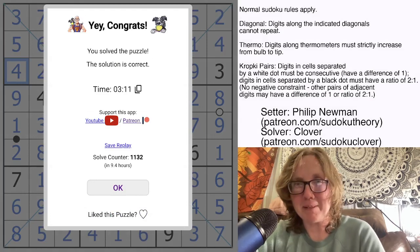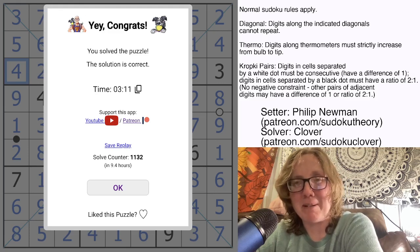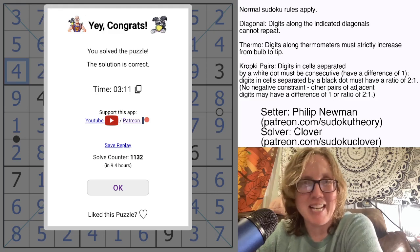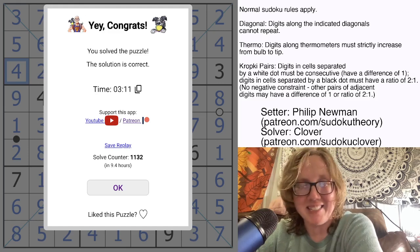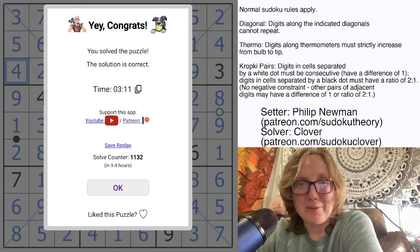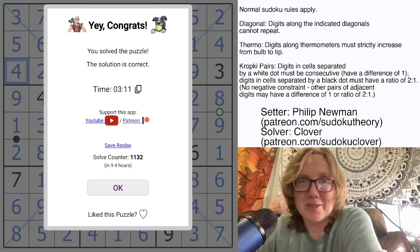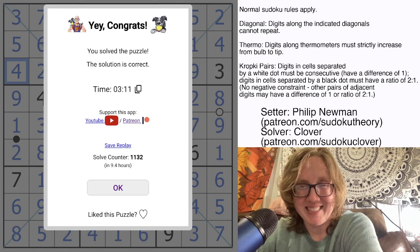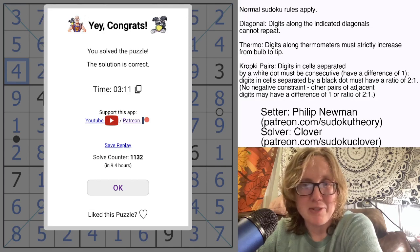By the way, give Philip some congratulations. He just reached 1 million registered solves of his puzzles in Sudoku pad over the last approximately 10 months since we started having access to that data. So huge congratulations to Philip. That's really exciting. 7 digits. Here's to the next million. Hope you enjoyed this puzzle. Link to solve yourself is in the description below, and I will catch you next time.